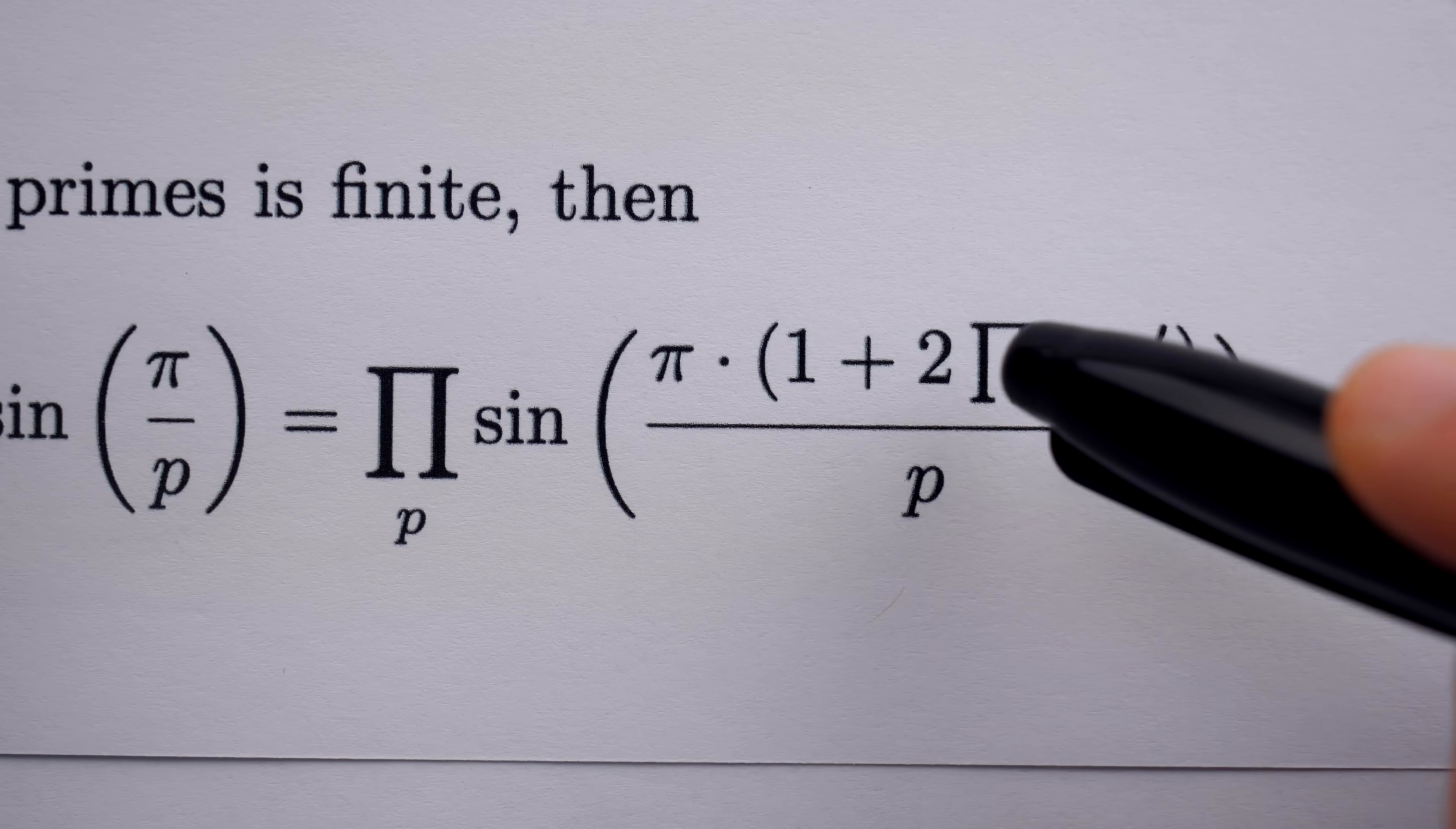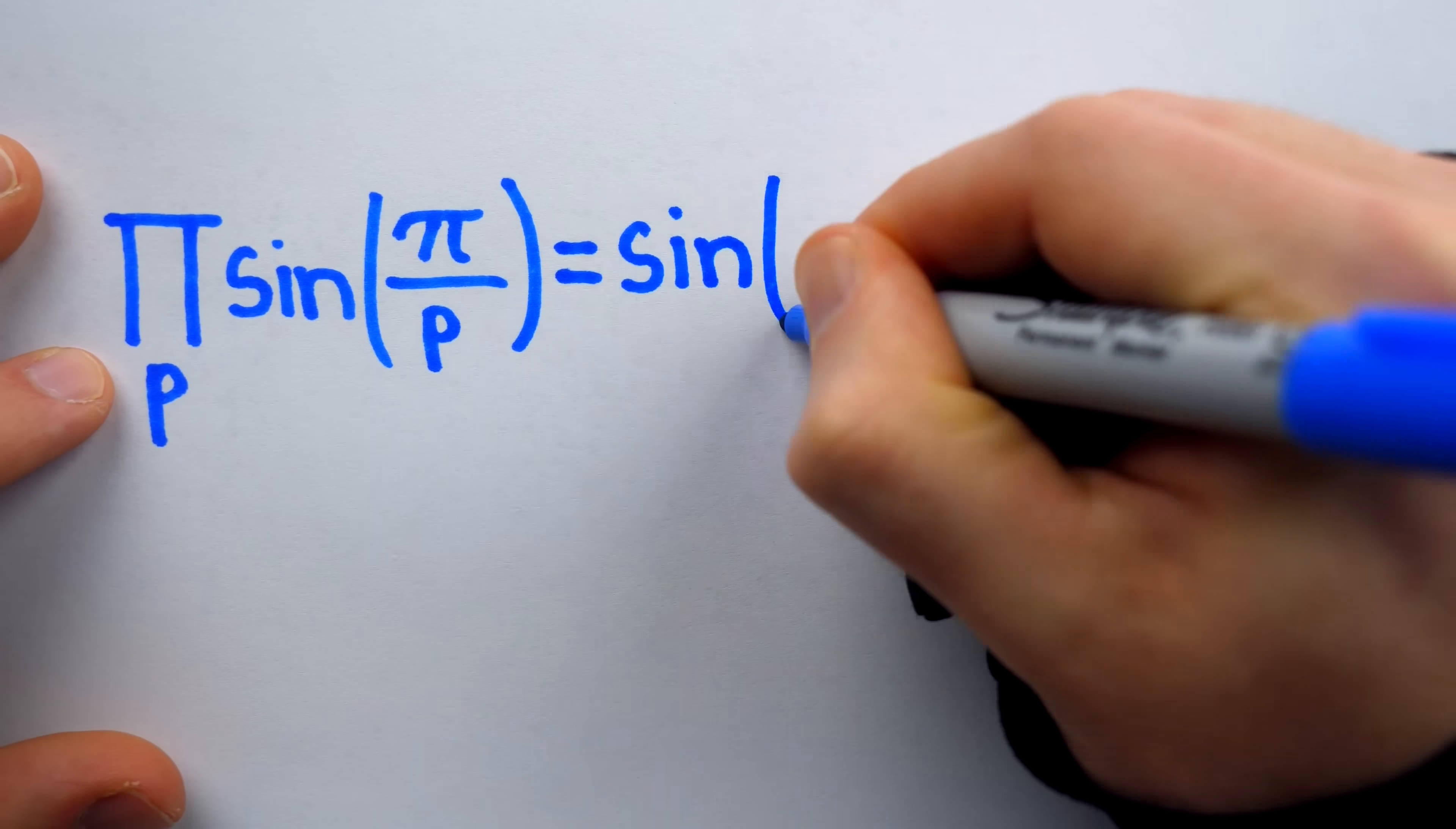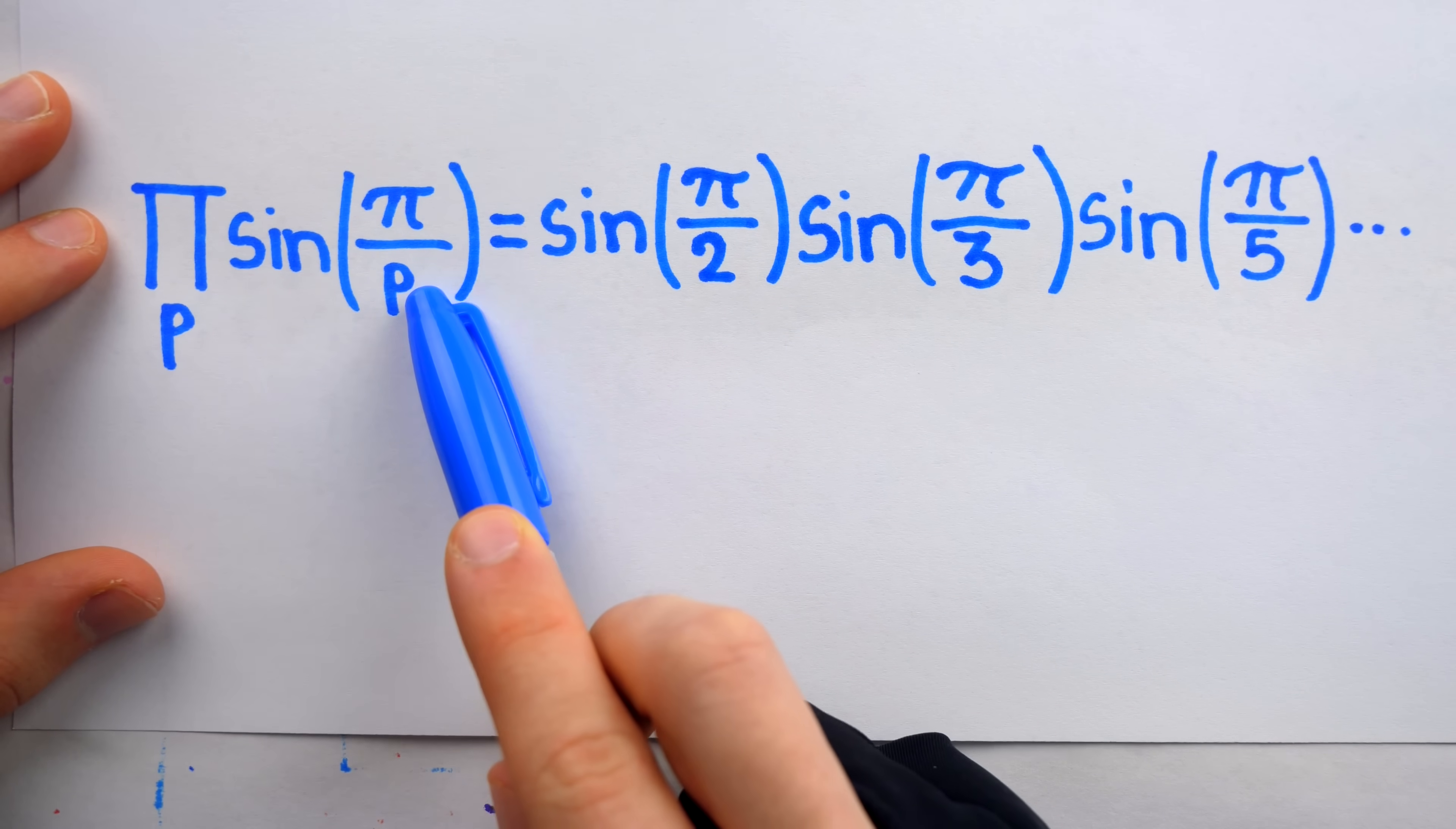So this uppercase pi over here is just the product of all primes. This one over here would look like this if we wrote out the first few terms. It's a product that has a term like this for every prime number P.